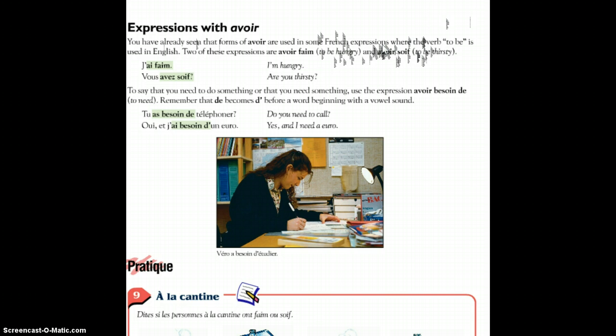Remember the de becomes d'apostrophe before a word beginning with a vowel sound. Here are two examples. Tu as besoin de téléphoner? Oui, et j'ai besoin d'un euro. Notice that we change as to go with the form tu, and we change ai to go with the form je. The rest of the phrasing doesn't change except for the end because of the vowel. D'apostrophe because un, or the number one, starts with a vowel in French, whereas te is a consonant, and therefore we use de.